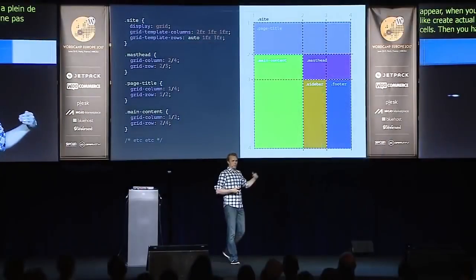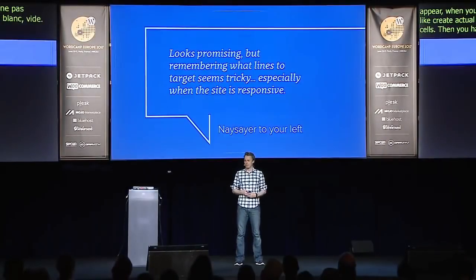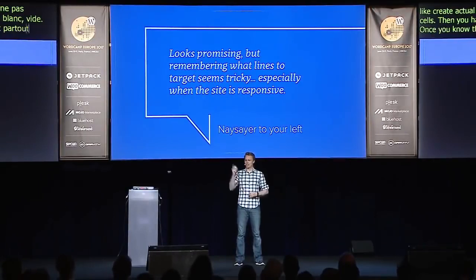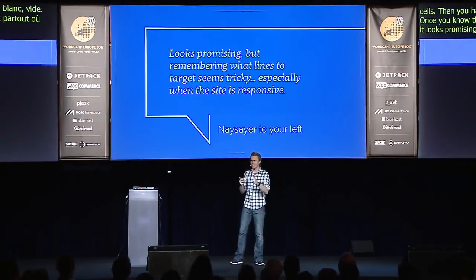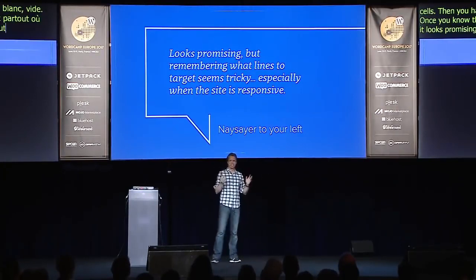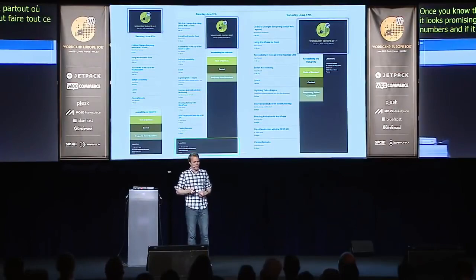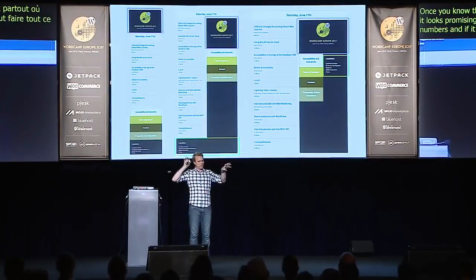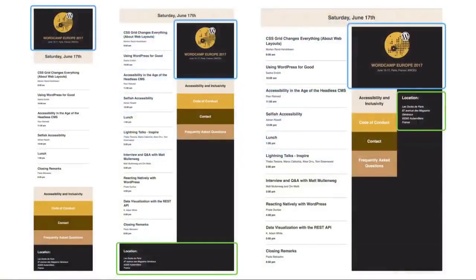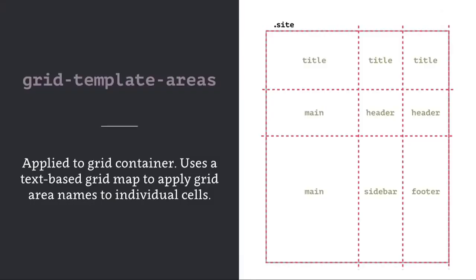Once you know this, you can place any of your elements anywhere you want in the grid. But you have to do all this counting and keep track of the line numbers — and then what if it's responsive and you keep changing the grid? It gets kind of nuts. In my layout, I move elements, particularly the header and the footer. Keeping track of that with numbers would be a pain. You can actually give each of the track lines a name and refer to them by name instead of by number, but that's still quite a lot of stuff to deal with.